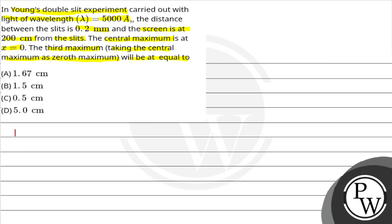We will solve using the key concept. In Young's double slit experiment, the nth maximum position formula is: x = n·lambda·D / d, where n is the number of the bright fringe (the number of the maxima), lambda is the wavelength of light, D is the distance between screen and source, and d is the distance between the slits.